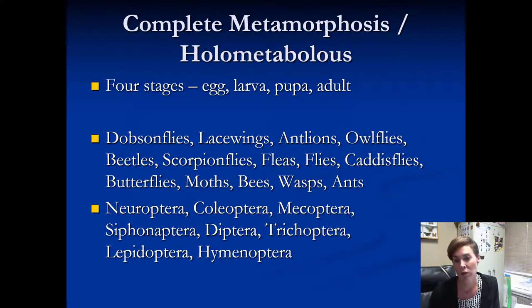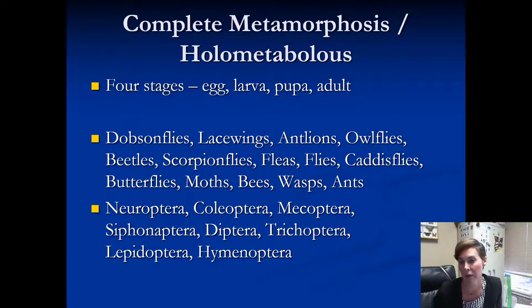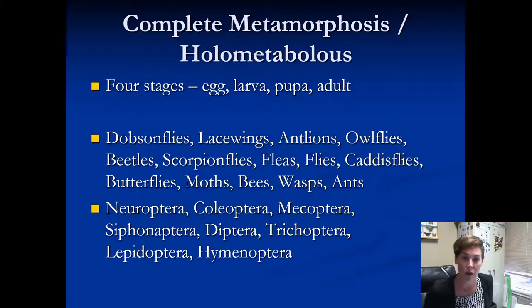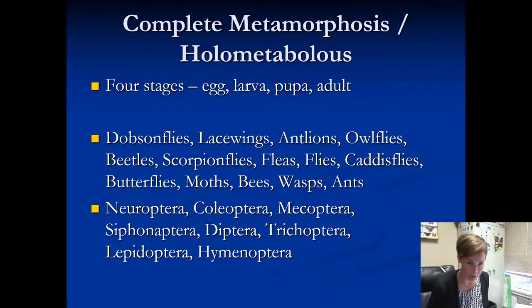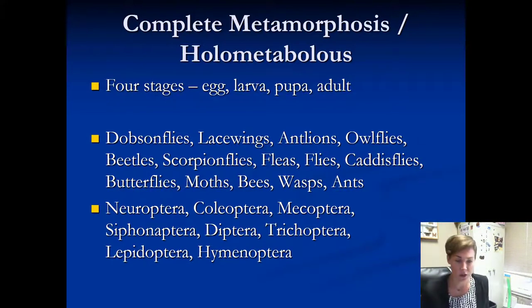It's a caterpillar only if it becomes a butterfly or a moth. It's a maggot only if it becomes a fly. It's a grub only if it becomes a beetle. So call them larvae and pupa, as opposed to caterpillars and cocoons.